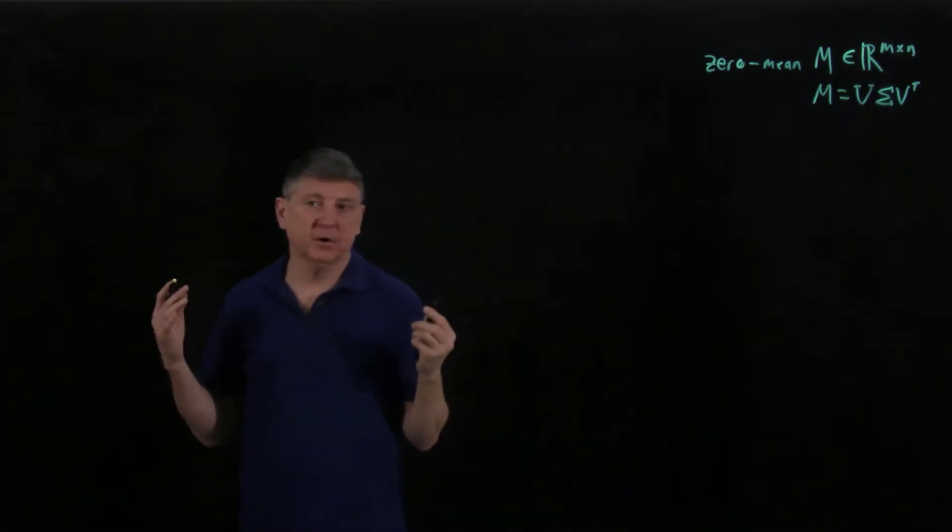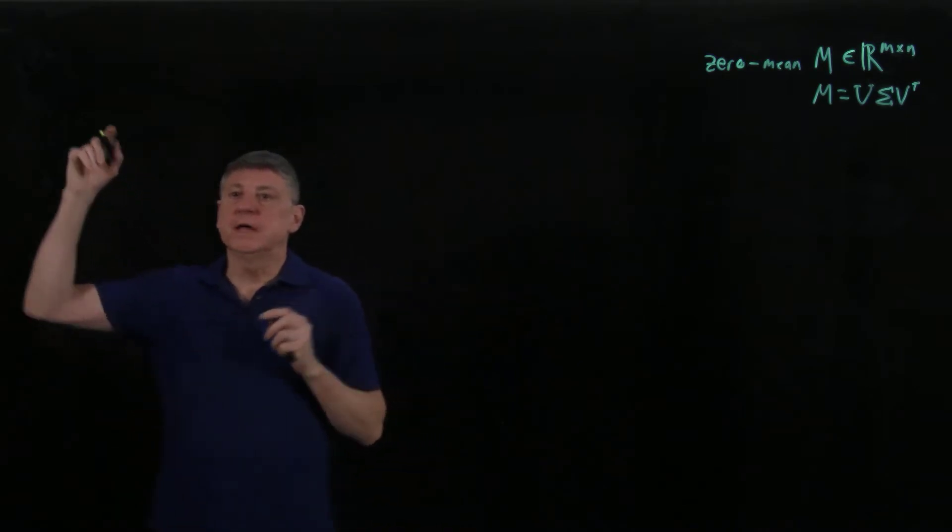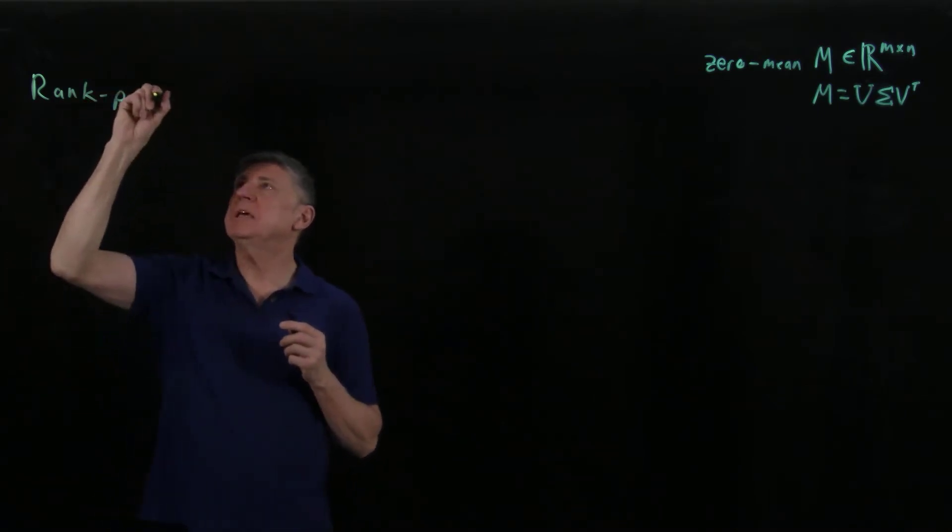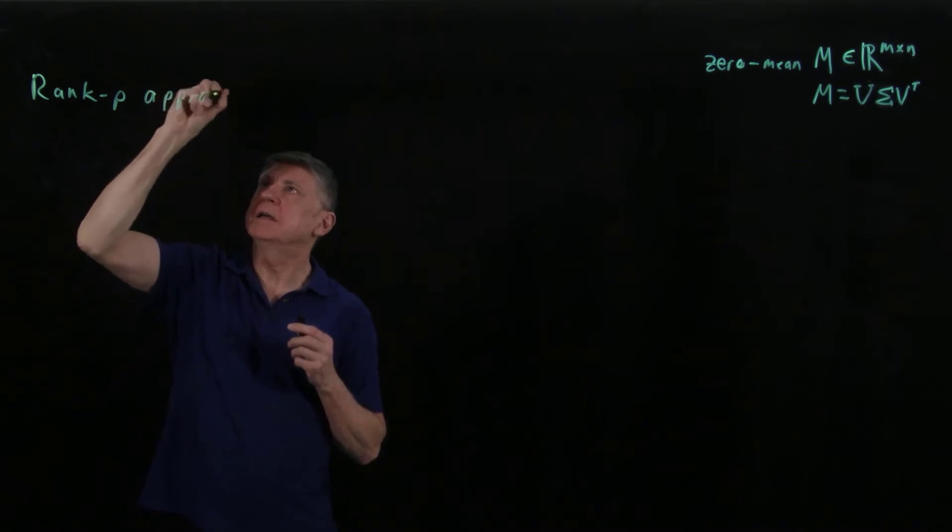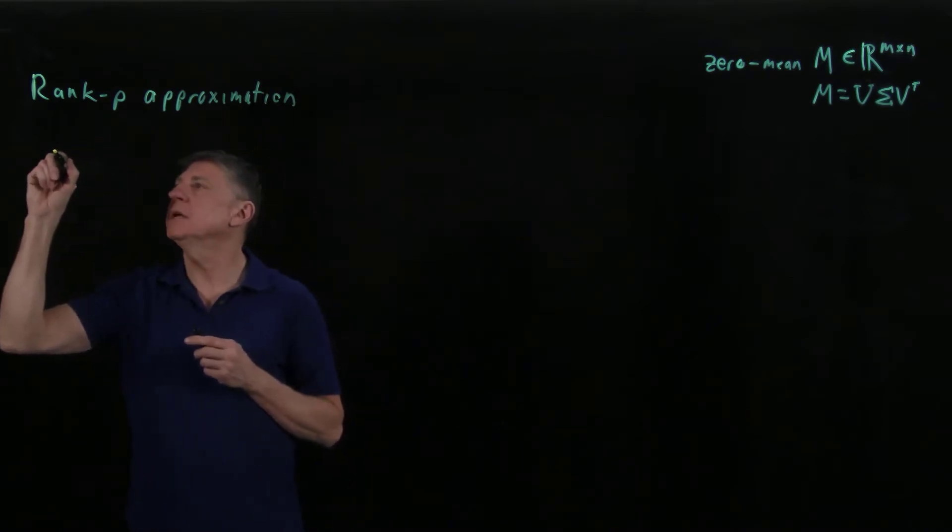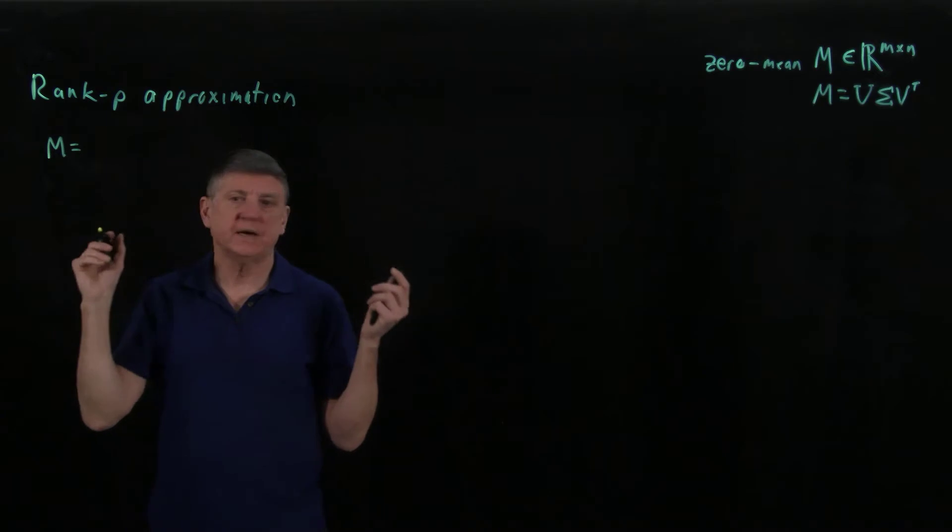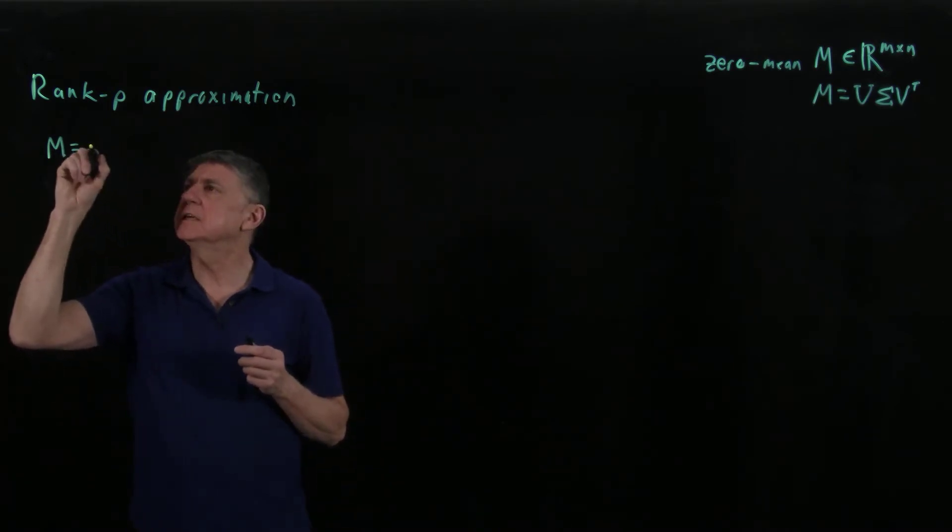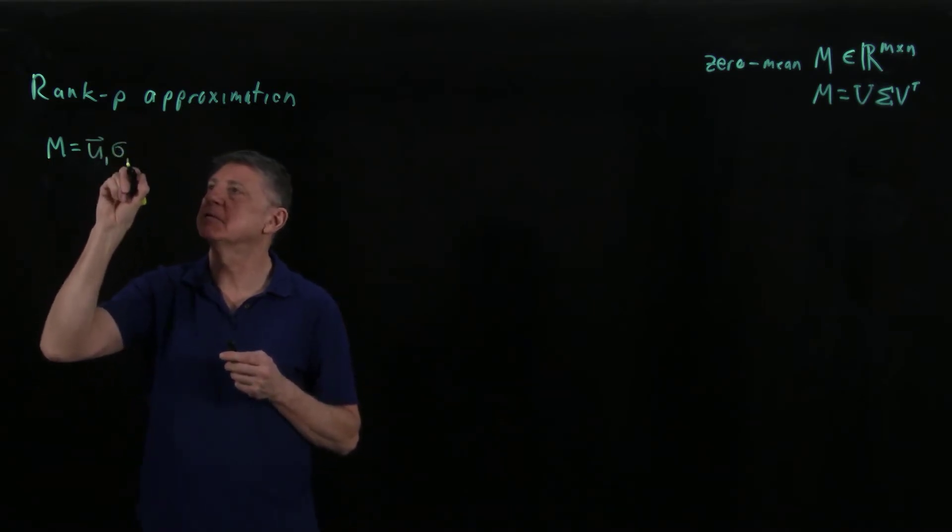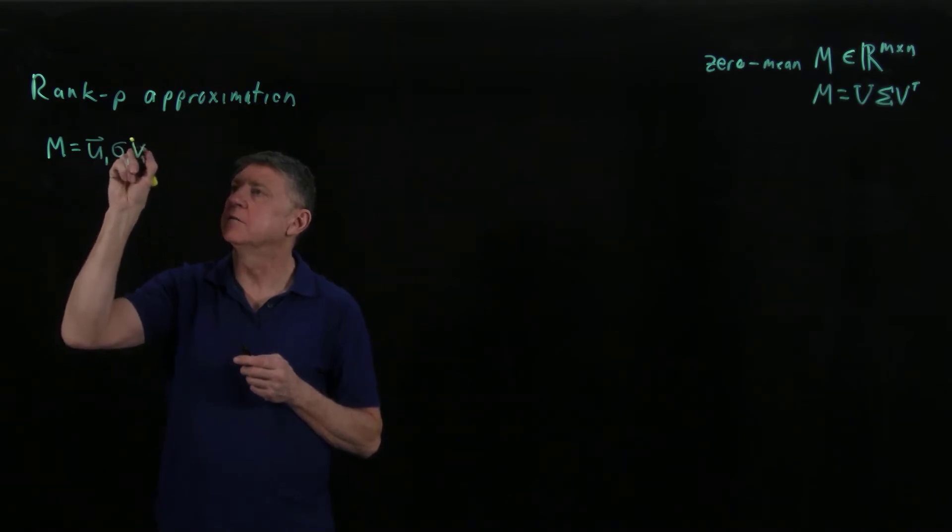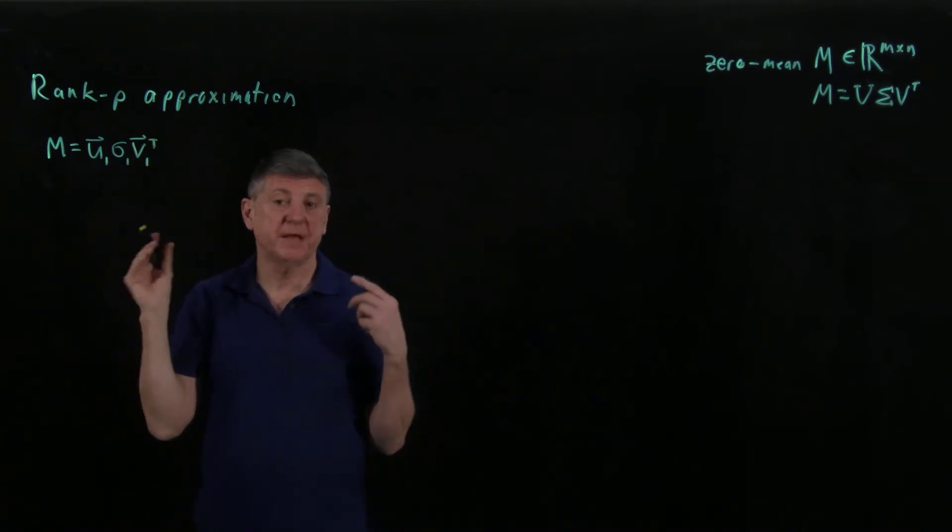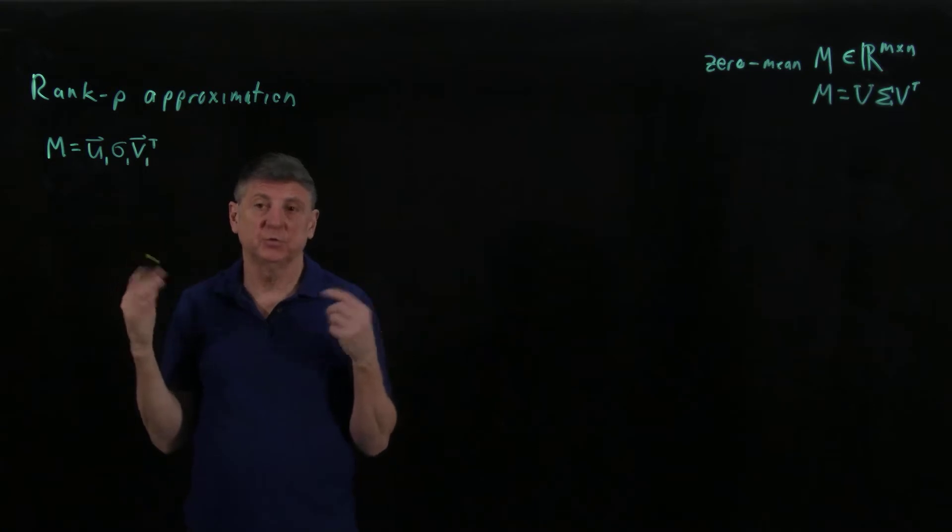Now, if we use the Eckart-Young theorem, what we can do is we can get a rank P approximation. And if we do that, what we get is that our matrix M using that approximation is we take the first left singular vector, we take the first singular value, and then we take the transpose of the first right singular vector. And this is a rank one matrix, and that is the best rank one approximation using either the L2 norm or the Frobenius norm.